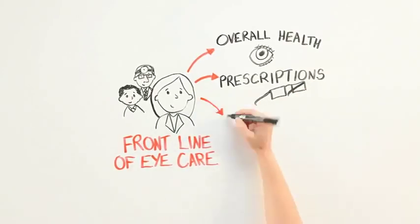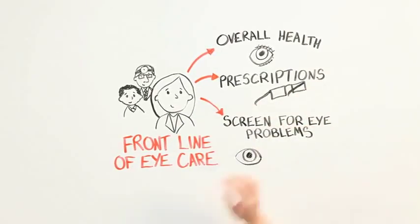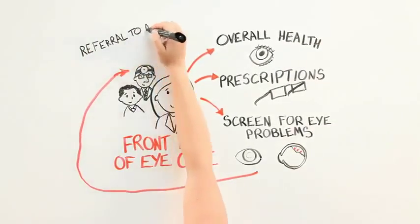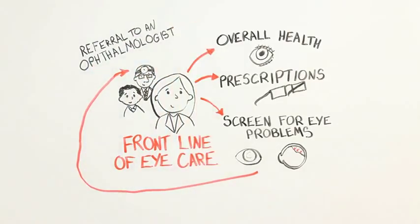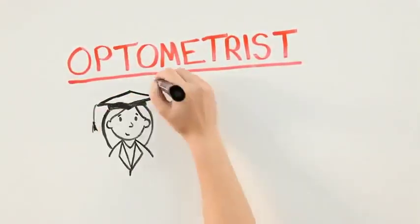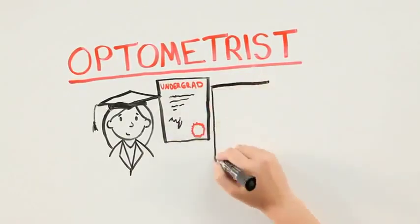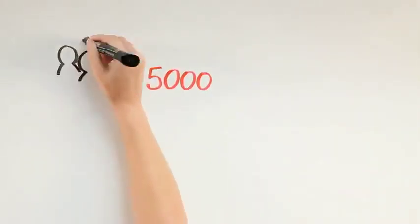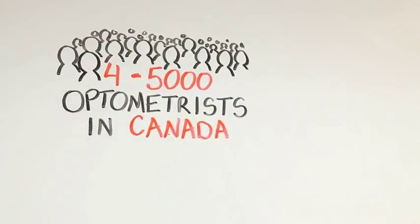An optometrist looks at the overall health of your eye and can give prescriptions for eyeglasses to sharpen your vision. Optometrists are trained to screen for eye problems like cataracts or retinal detachment that need emergency attention, and they refer patients who need advanced or urgent care directly to an ophthalmologist. An optometrist typically does an undergraduate degree and then goes to a school of optometry for four years. There are about four to five thousand optometrists in Canada.